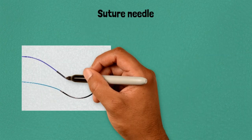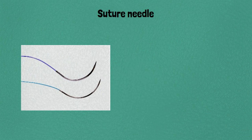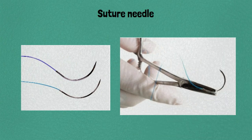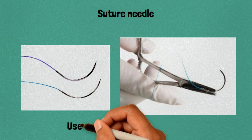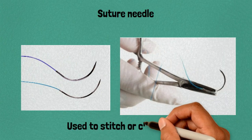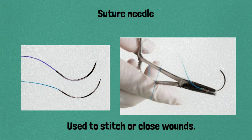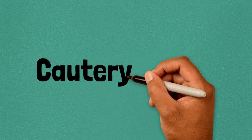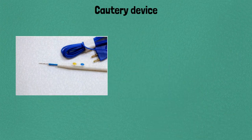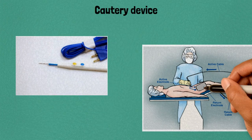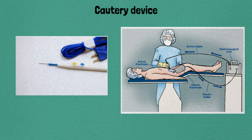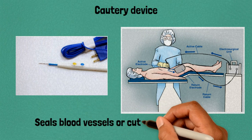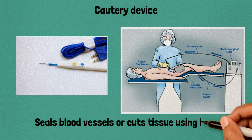Fifty-eight: suture needle, used to stitch or close wounds. Fifty-nine: cautery device, seals blood vessels or cuts tissue using heat.